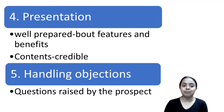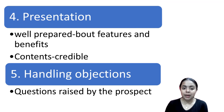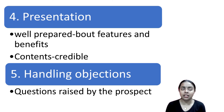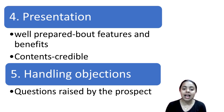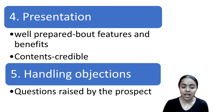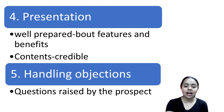The fourth step is presentation — being well prepared with all features and benefits included. The customer may give feedback, and the salesperson should ask questions to understand their needs and provide credible information. The fifth step is handling objections — addressing all customer doubts properly. A salesperson must tackle all objections effectively.